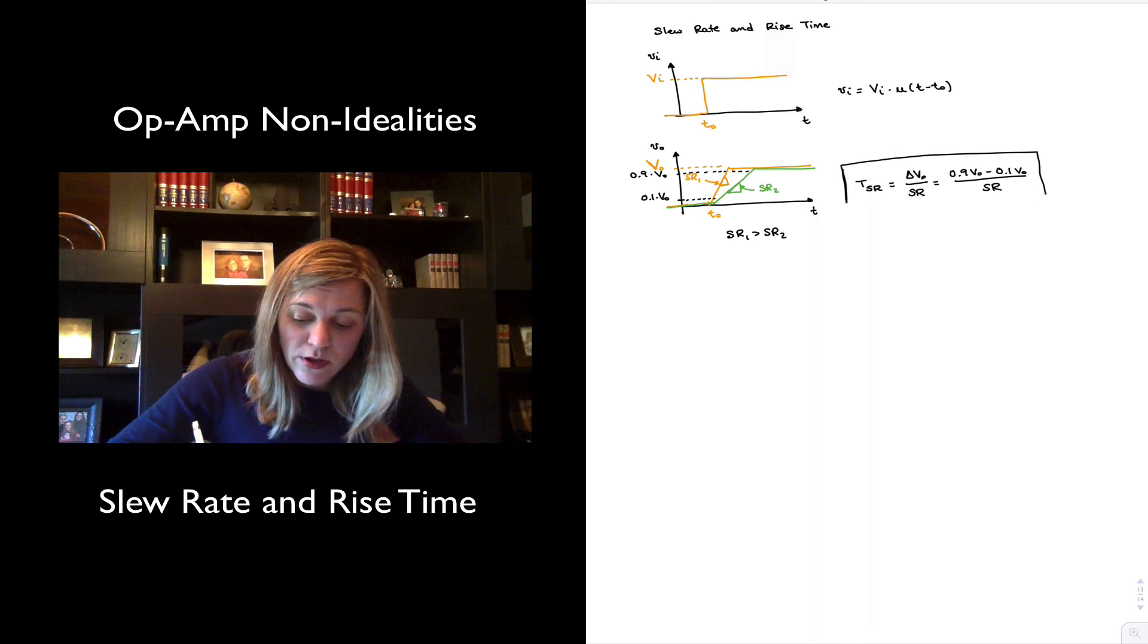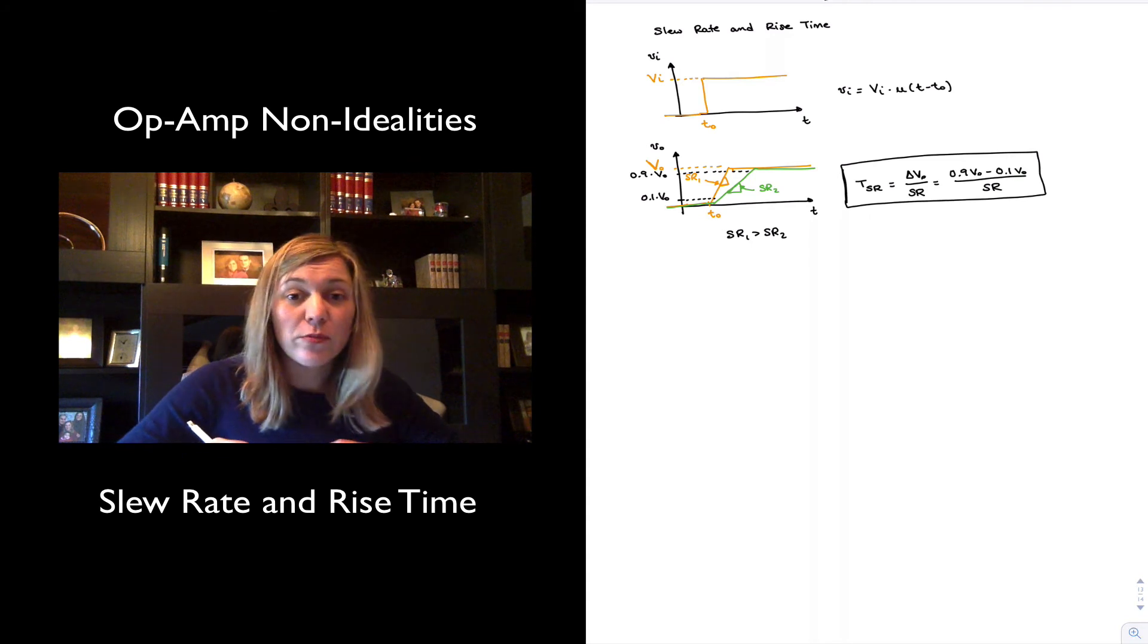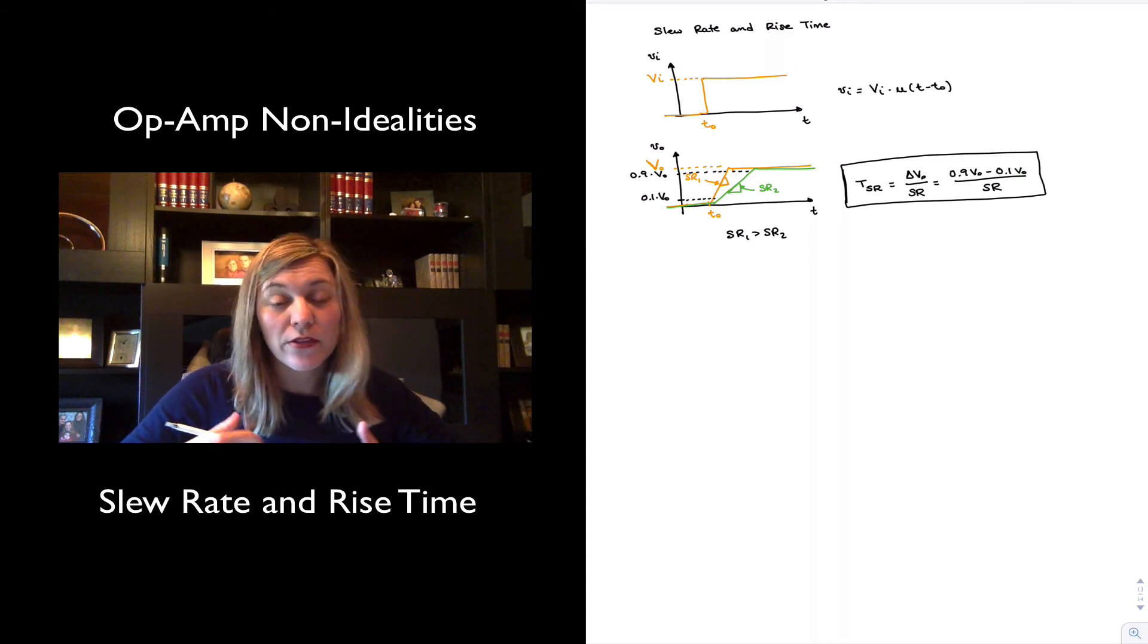Things to notice: in the case of the bandwidth limitation, the rise time was dependent on the gain of the amplifier. In the case of the slew rate, it is independent of the gain of the amplifier. It is exclusively dependent on the peak voltage level.